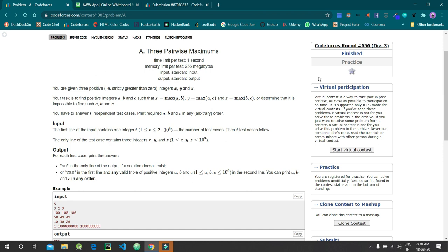The condition given is that x equals max of (a, b), y equals max of (a, c), and z equals max of (b, c), or we need to determine that it is impossible to find a, b, and c. We need to answer t independent test cases.